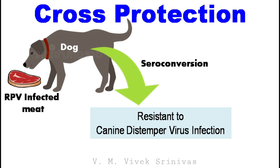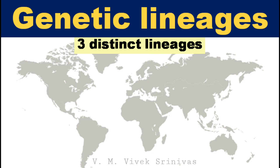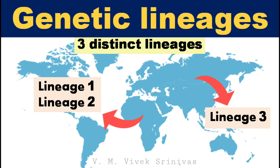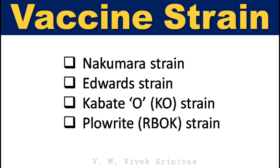There were three Rinderpest virus genetic lineages: Lineage 1 and Lineage 2 from Africa, and Lineage 3 from Asia. The Rinderpest virus vaccine strains include the Nakamura strain, Edwards strain, Cobb-8 O strain, and Plowright strain.